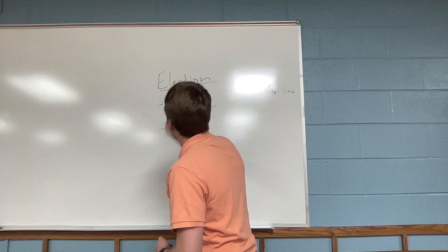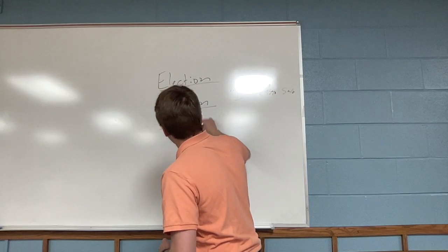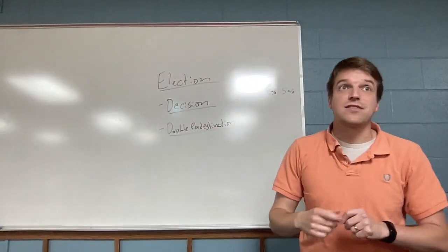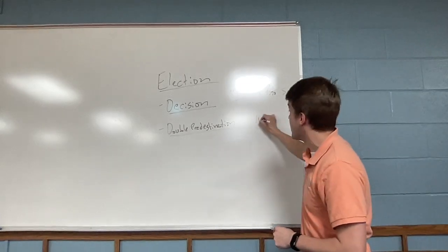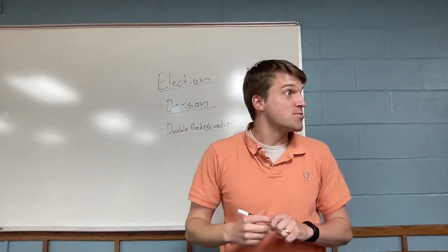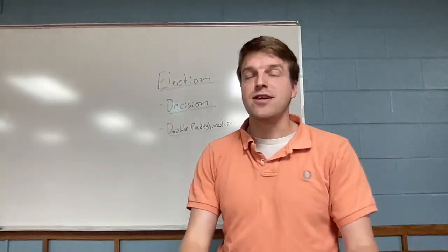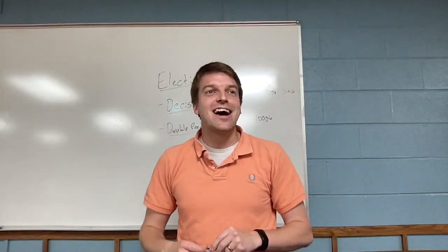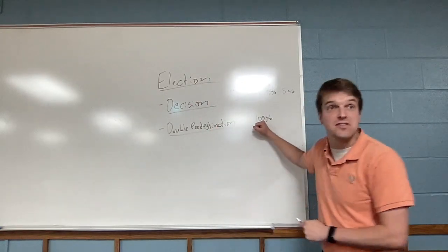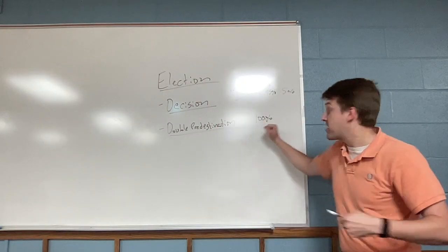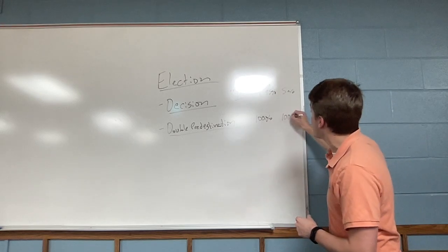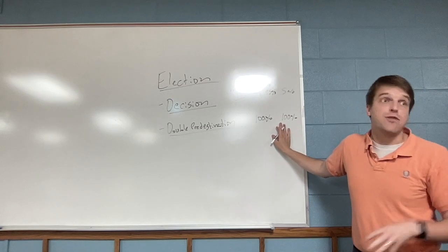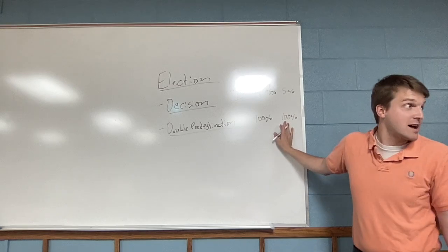The second option is what I just said is double predestination. And double predestination says, well, Scripture pretty clearly says that God does 100% of the work of choosing. So God does 100% of the work of choosing who is saved, which a Lutheran agrees with, but they would also say that God does then 100% of the work of choosing who is not saved. So if somebody is condemned to hell, it's because God chose that.